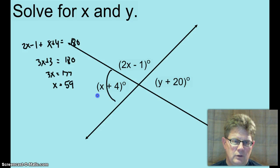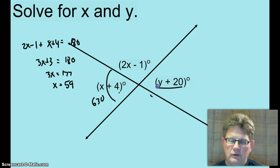All right, solve for x and y. Okay, first you're going to write an x equation. So go ahead and write an x equation and solve. Good. x equals 59. So that makes this angle right here, how big does it make this angle? 59 plus 4?